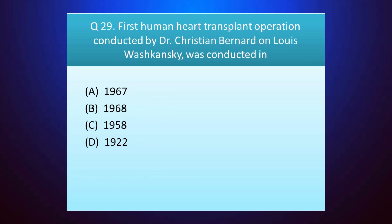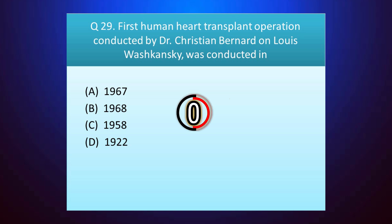Question number twenty-nine: the first human heart transplant operation conducted by Dr. Christiaan Barnard on Louis Washkansky was conducted in — your time starts. The answer is option A — 1967.